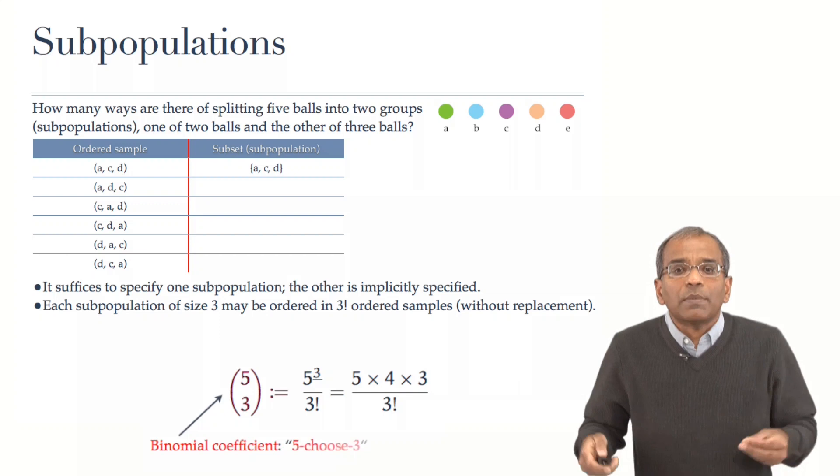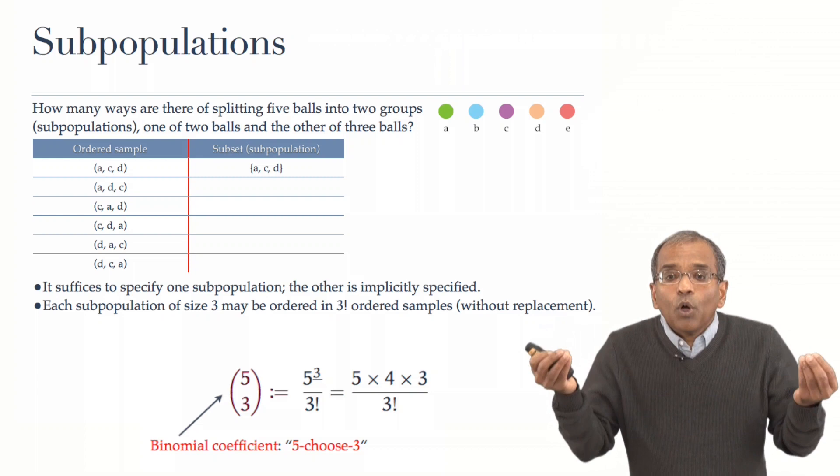This is the number of subpopulations. We give this a special name. And this name is a famous name historically. It's called the binomial coefficient. We call this, in terminology,